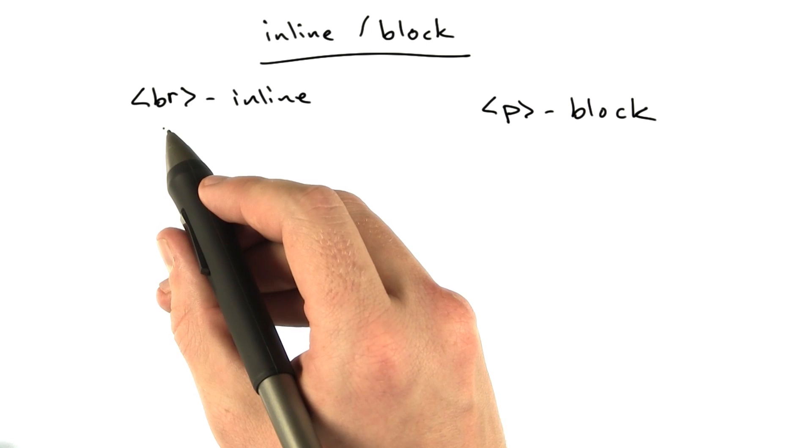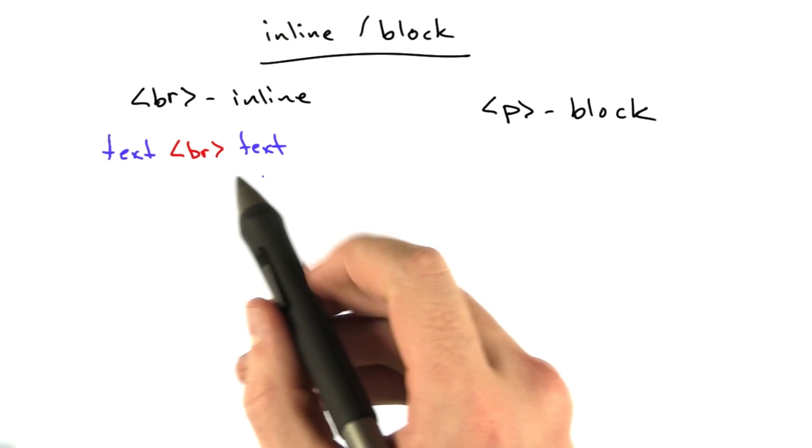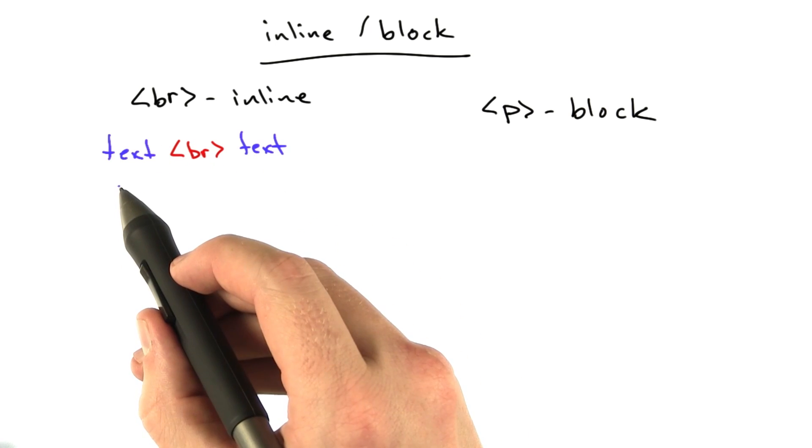Now, so what the br tag was actually doing was just ending a line. So when we have some text and we put a br in the middle of it, it just basically says the line ends here and this guy wraps to the next line.